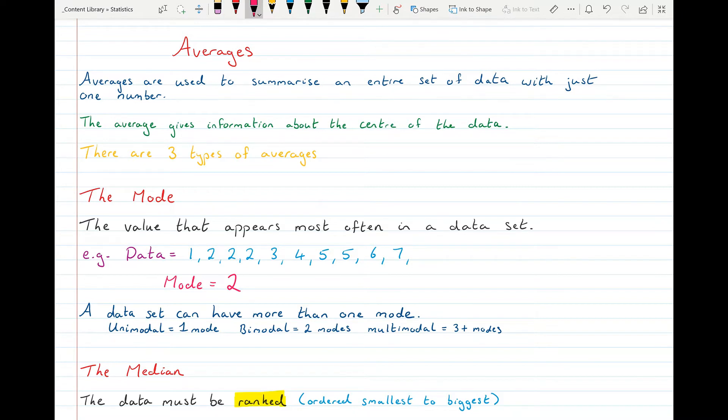And a data set can have more than one mode. So it could have two or three numbers that appear the same amount of times. So they would all be modes. If it has only one mode, we say that it is unimodal, like a unicycle. And if it's two modes, we say it's bimodal, like a bicycle. Or if it has more than two modes, so three or more, we say that it's multimodal.